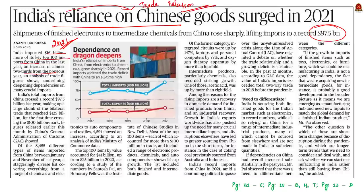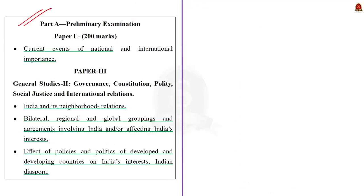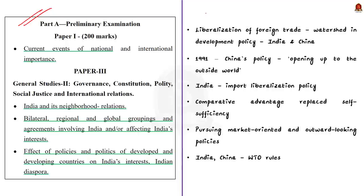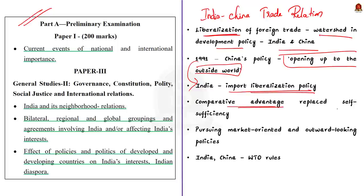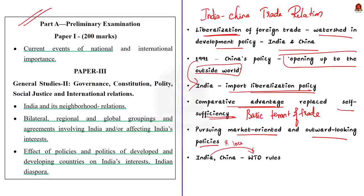The syllabus relevant to this news article is given for your reference. Both India and China were once closed economies, and the liberalization of foreign trade was a watershed in the development policy of both countries. China adopted the policy of opening up to the outside world, and in 1991, India initiated an import liberalization policy. As a result, comparative advantage replaced self-sufficiency as the basic tenet of trade policy, and both countries are now pursuing market-oriented and outward-looking policies. India has been a WTO member since its inception, and China joined the WTO in 2001. Both countries adhere to WTO rules in conducting international trade.